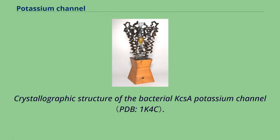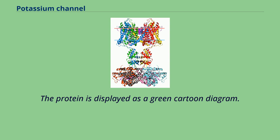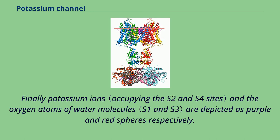Crystallographic structure of the bacterial KcsA potassium channel. In this figure, only two of the four subunits of the tetramer are displayed for clarity. The protein is displayed as a green cartoon diagram. Backbone carbonyl groups and threonine sidechain protein atoms are displayed, and potassium ions and oxygen atoms of water molecules are depicted as purple and red spheres respectively.